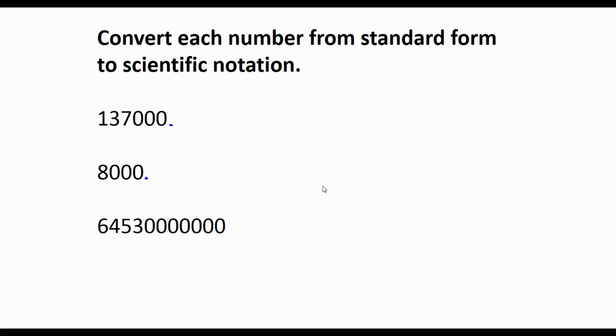That would be the first thing I'd do is I'd put the decimal at the end. And when I'm trying to convert a number to scientific notation, what I want to do is I want to move that decimal so that I get a number between 1 and 10.